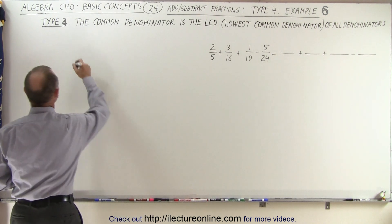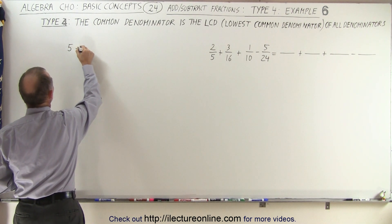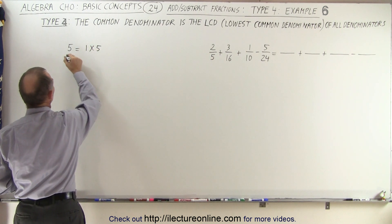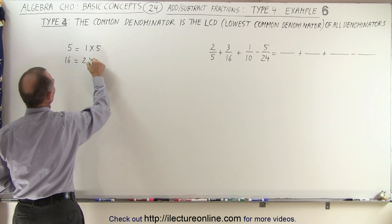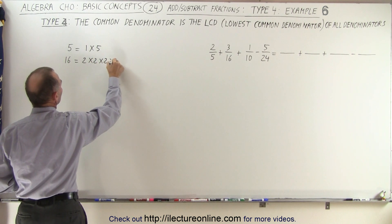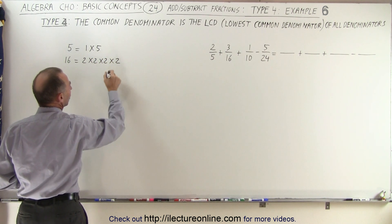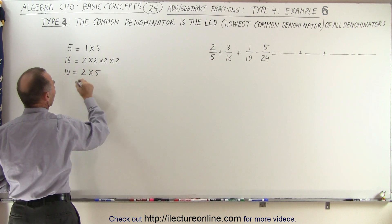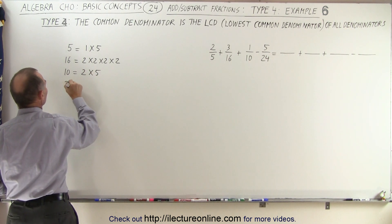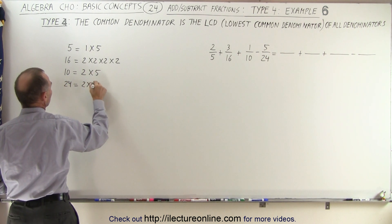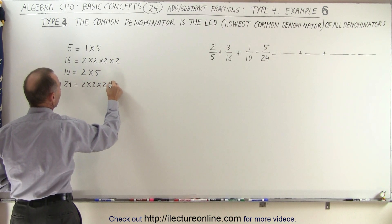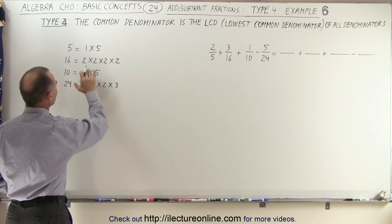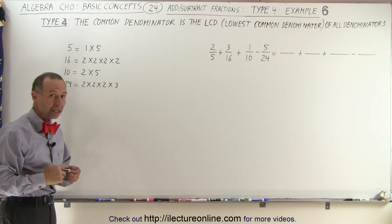We take the number 5 and realize it can be written as simply 1 times 5. The number 16 is equal to 2 times 2 times 2 times 2. The number 10 can be written as 2 times 5, and the number 24 is equal to 2 times 2 times 2 times 3. Those are the prime factors of each of the four denominators.